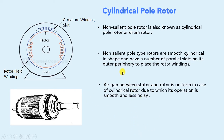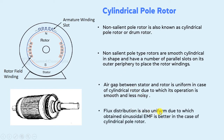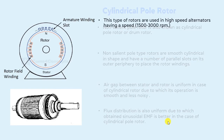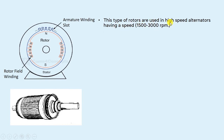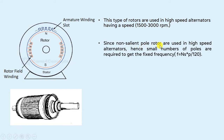Due to the uniform air gap in the cylindrical pole rotor, the flux distribution is also uniform, and as a result the sinusoidal EMF obtained is better in the case of the cylindrical pole rotor. These types of rotors are used in high-speed alternators having a speed of 1500 to 3000 RPM. Since non-salient pole rotors are used in high-speed alternators, a small number of poles are required to get the fixed frequency, as F = NP / 120 — if speed N is higher, a smaller number of poles P are required to get the desired frequency.